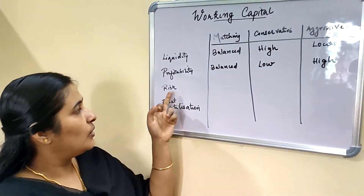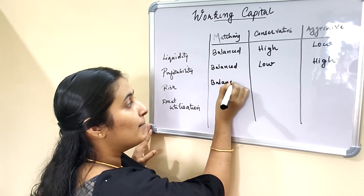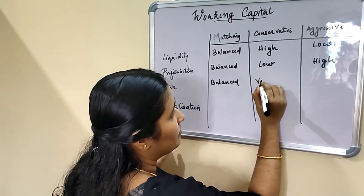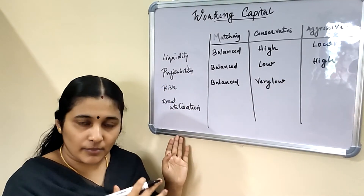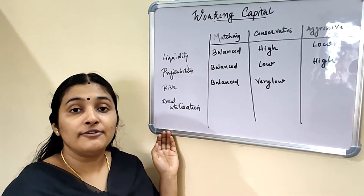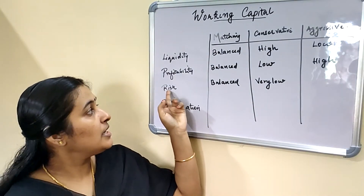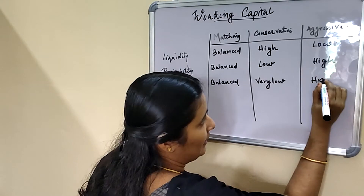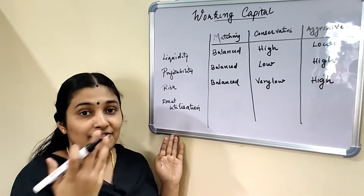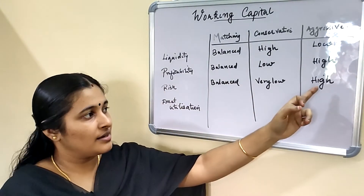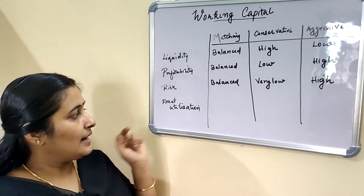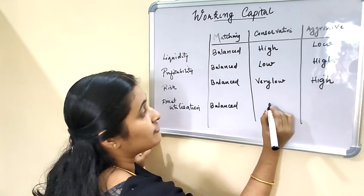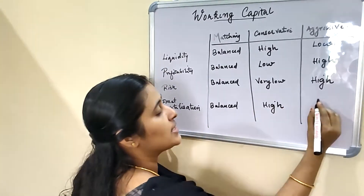In terms of risk, the matching approach gives balanced risk. The conservative approach carries very low risk because long-term sources of funds are used to meet almost all assets, with short-term financing only for unforeseen contingencies. The aggressive approach carries high risk because short-term funds are used even to meet permanent assets — high risk leads to high profitability. For asset utilization, the matching approach gives balanced utilization, the conservative approach gives high asset utilization, and the aggressive approach gives low asset utilization.